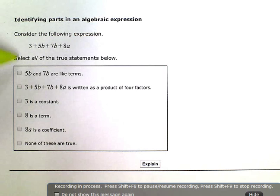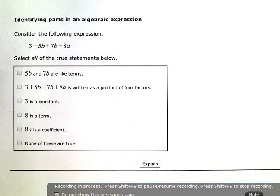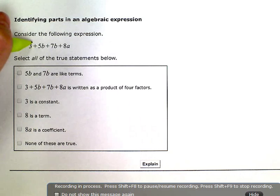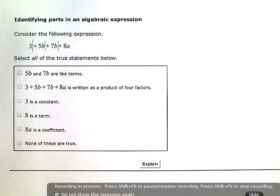So my first statement says 5b and 7b are like terms. When you're looking at an expression, terms are separated by the plus and minus signs. So if I draw a dividing line every time I have a plus or a minus, I can see that this expression has 4 terms.